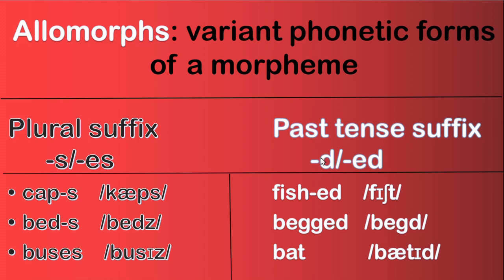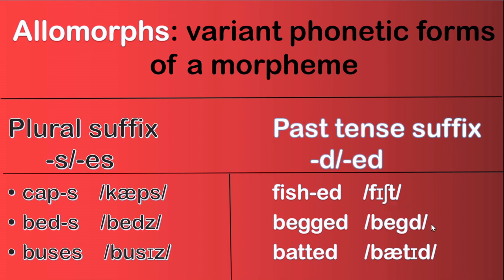In the past tense also, we have this feature. We usually add D or -ed to a word to get the past tense in English. So: 'fished,' 'begged,' 'batted' — all have -ed. Morphologically they look the same, but in pronunciation you get allomorphs. 'Fished' — it is pronounced as T: 'fished.' 'Begged' — it's pronounced as D: 'begged.' And 'batted' — it becomes ID: 'batted.' So the past tense morpheme -ed has three different realizations — three allomorphs: T, D, and ID.